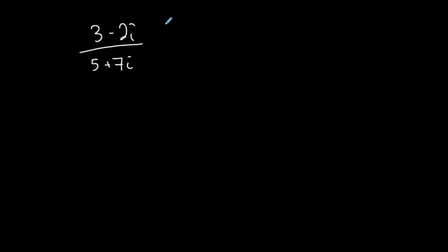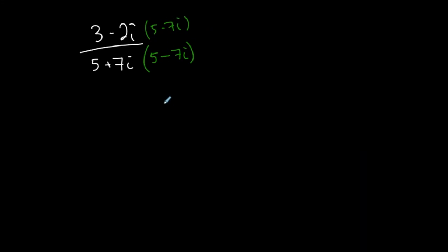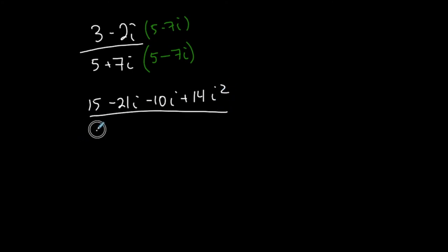Let me do one more dividing complex numbers. Let's say I have (3 - 2i) over (5 + 7i). I want the quotient in standard form. I take the conjugate of the denominator — same two terms, sign in the middle changes — so the conjugate of (5 + 7i) is (5 - 7i). I multiply the top and bottom by that conjugate. FOILing the top: first 15, outer -21i, inner -10i, last +14i squared. FOILing the bottom: 25, outer -35i, inner +35i, last -49i squared.